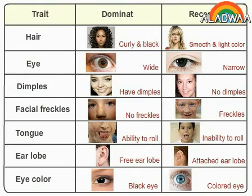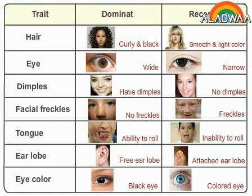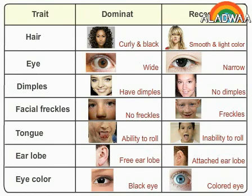Facial freckles — dominant: no freckles; recessive: freckles. Trait: Tongue — dominant: ability to roll; recessive: inability to roll. Trait: Ear lobe — dominant: free ear lobe; recessive: attached ear lobe. Trait: Eye color — dominant: black eye; recessive: colored eye.